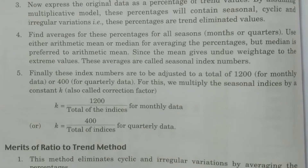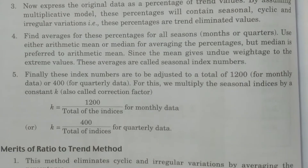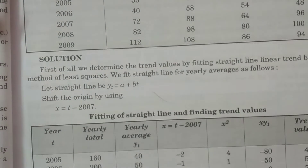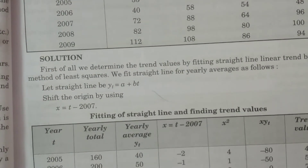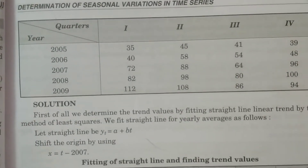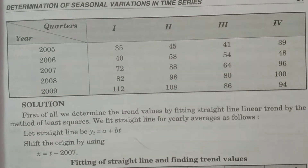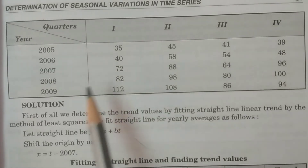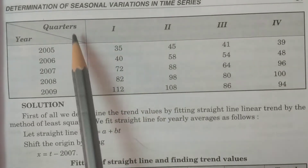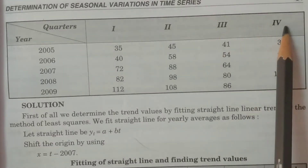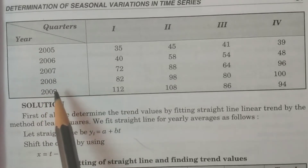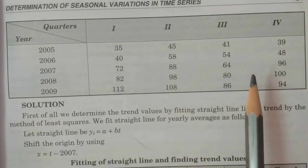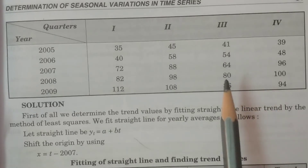This is the ratio-to-trend method. I will show you a problem to identify the method. You can easily understand the procedure through the problem. The data is given quarterly — four quarters — across five years. The data here represents sales of some particular company.